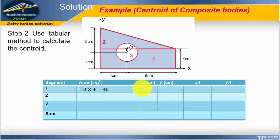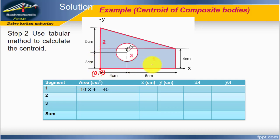Next, the x̃ coordinate for Shape 1. Remember, this is our origin at (0, 0). We have to calculate the centroid of each shape from this origin — how far we go to reach the center of each shape. For Shape 1, which is a rectangle, from the origin we go b over 2 to get x̃. Therefore, x̃ equals b over 2, which equals 5 cm.